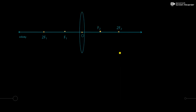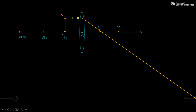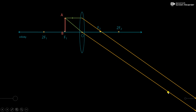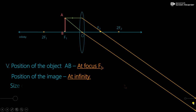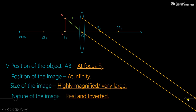Fifth position: the object has moved to point f1, the first focus. The incident ray parallel to the principal axis follows rule 1 and passes through f2. The second ray passes through the optical center and goes undeviated. The rays do not meet on the screen but will meet at some point ahead. Object is at focus f1; image formed is at infinity. Size of the image is highly magnified or very large. Nature of the image is real and inverted.